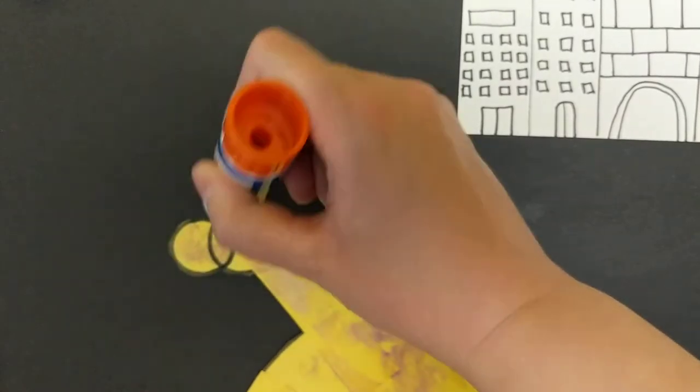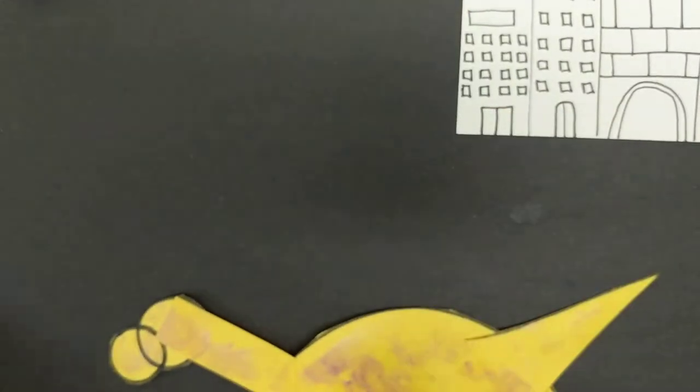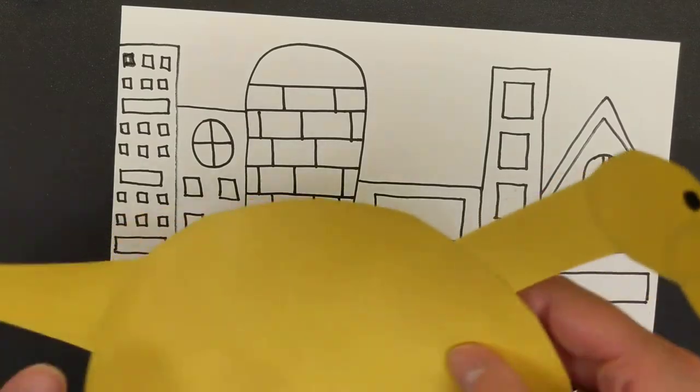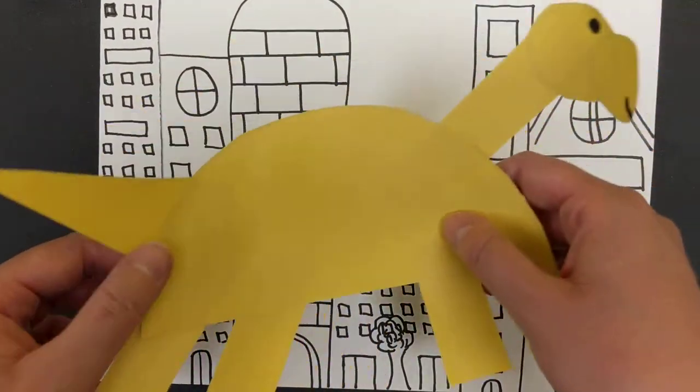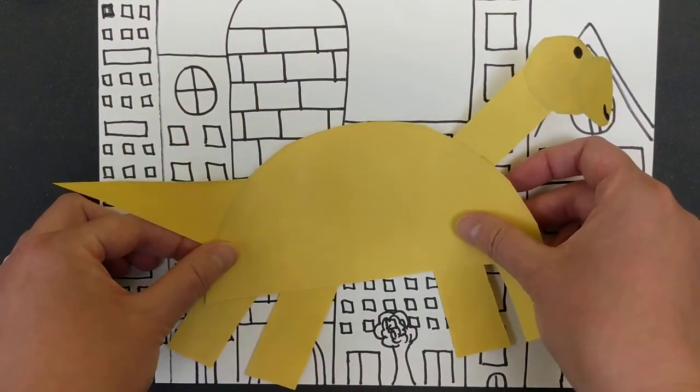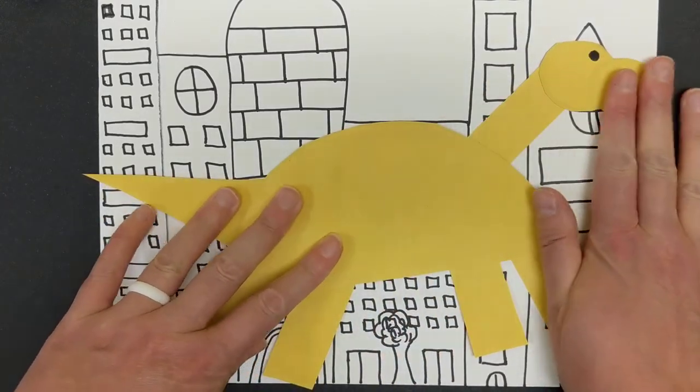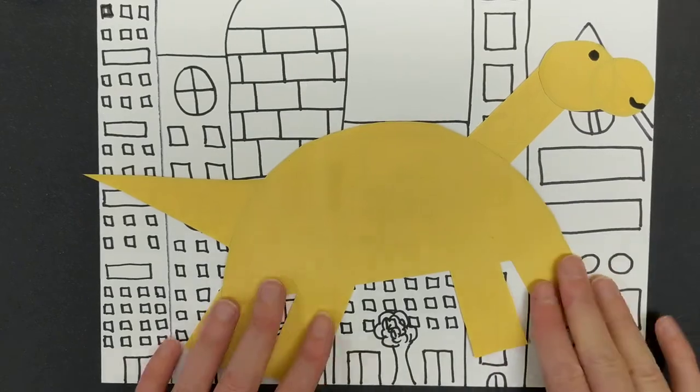It doesn't take too much glue, and also if you have white glue at home, white glue will work really well with this, and you can also use tape. There's a lot of different ways to make this work. Another fun thing that you could do—actually, first let's get our little dinosaur connected. Here we go.